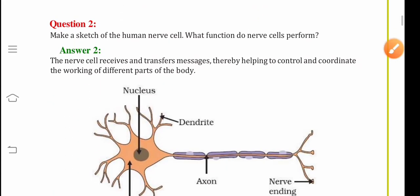Now we come to the second question. Make a sketch of the human nerve cell. What function do nerve cells perform? The nerve cells receive and transfer messages thereby helping to control and coordinate the working of different parts of the body. And here is the structure of the nerve cell.